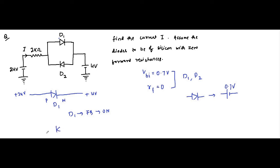D2 is off — it will be replaced by an open circuit. I have already made many videos related to how to find the state of a diode: forward bias, reverse bias, open circuit, short circuit. Please watch the videos related to diodes in the analog electronics playlist where I have explained everything. So here we find that D1 is on and D2 is off.